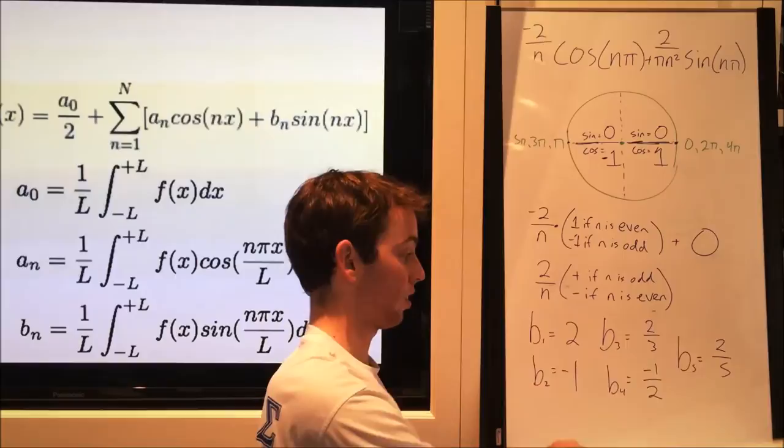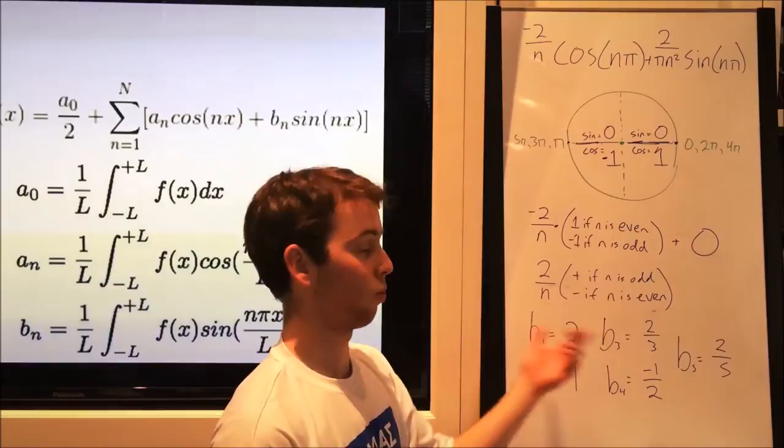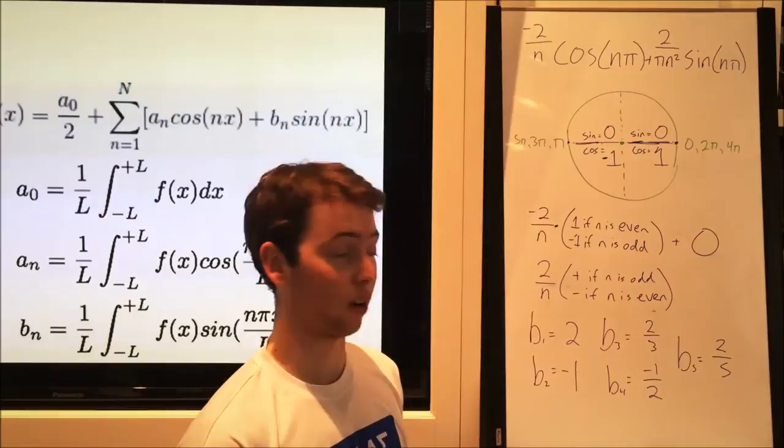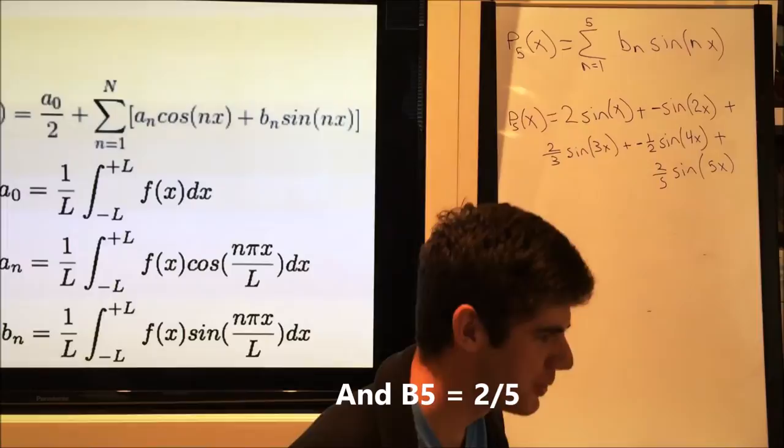Finally, we plug this in and solve for b_n through 1 through 5. So we get b_1 equals 2, b_2 equals negative 1, b_3 equals 2 thirds, b_4 equals negative 1 half, and b_5 equals 2 fifths.